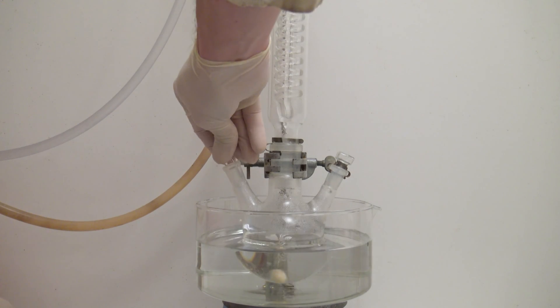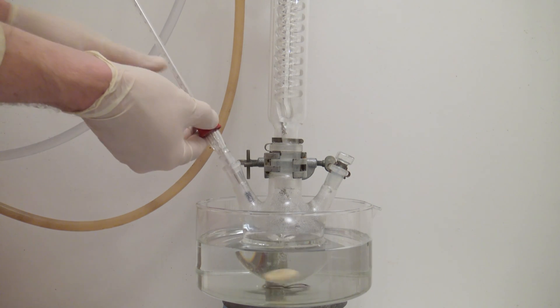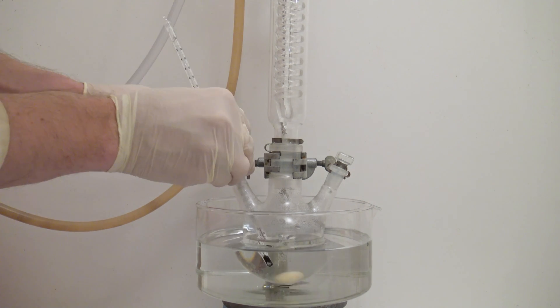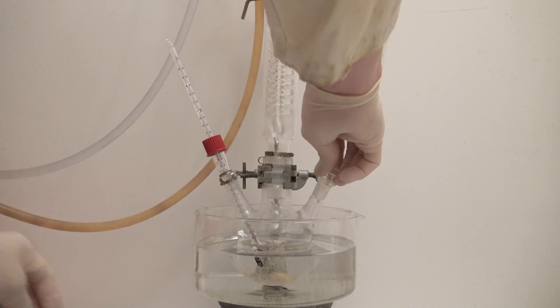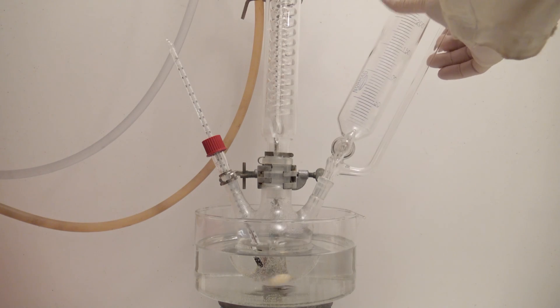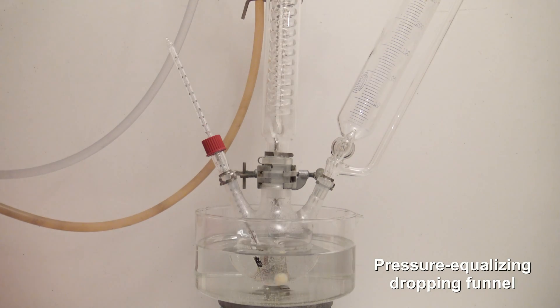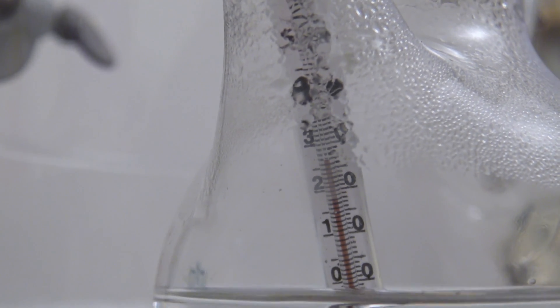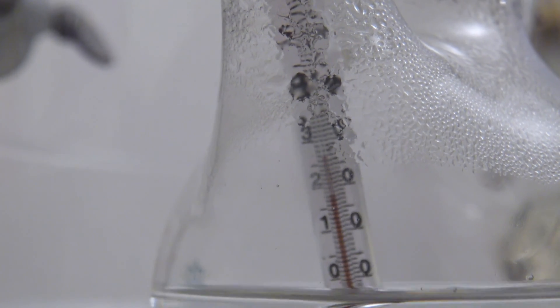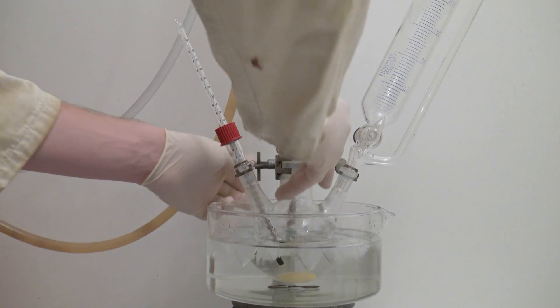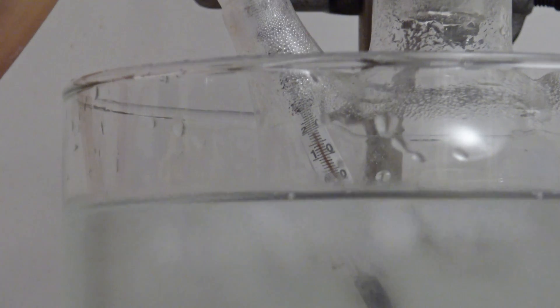For the reaction, a thermometer and a pressure equalizing dropping funnel were added to the flask. The main point in this case is that the hydroxide solution doesn't become too hot and begins to boil. The temperature was already below 30 degrees C, but ice was added to the water bath to lower the temperature even more. It was left until the temperature was at 15 degrees C.